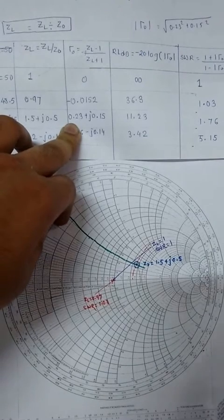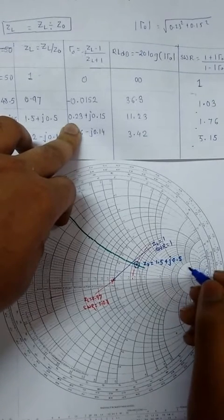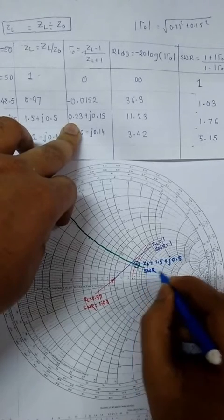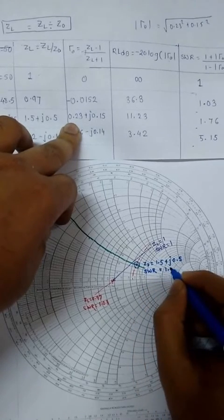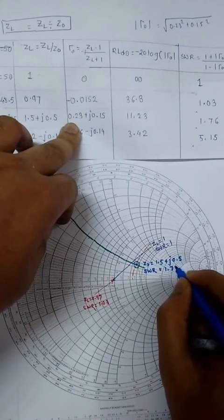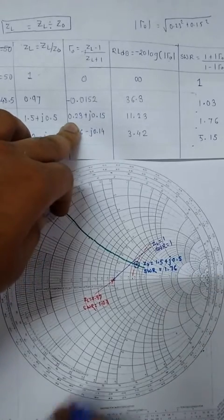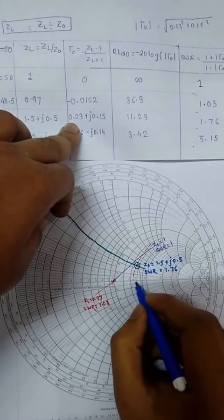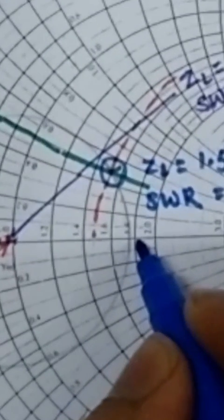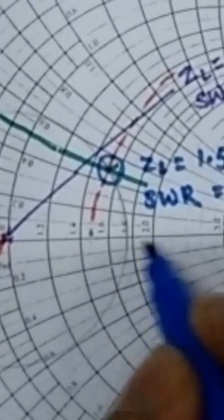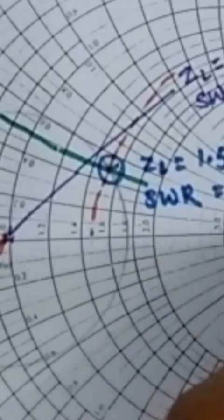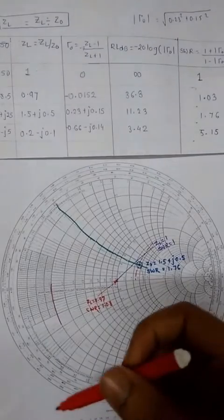So graphically, you can say the SWR is equal to 1.76. You can see here, it's around between 1.6 and 1.8. Between 1.6 and 1.8, you can write 1.76. For the next result.